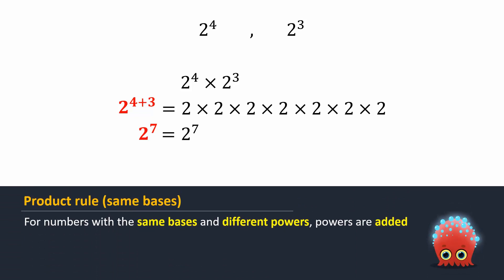It tells us that if the bases are the same, we simply add the powers to get the answer. 2 raised to the power 7 is equal to 128.